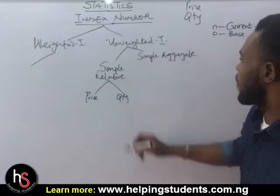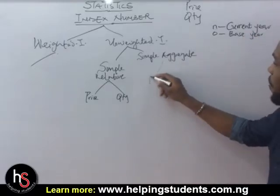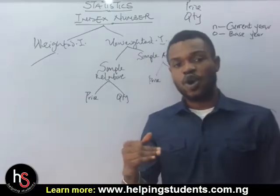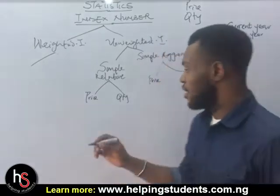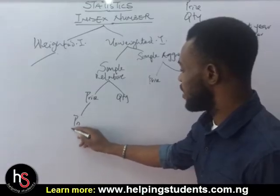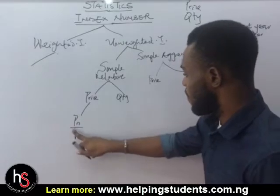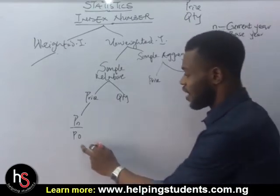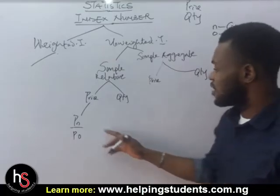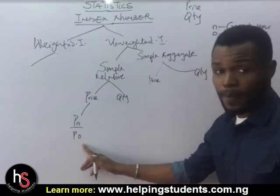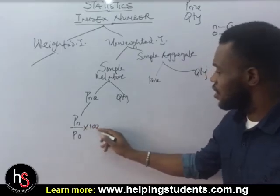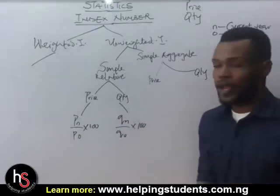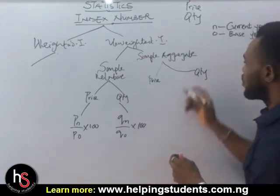Under the simple relative we'll talk about price and quantity. Under the simple aggregate we'll also talk about price and quantity. Always have in mind that it is the price or quantity of the current year over the base year. For price we have Pn over Po times 100; for quantity we have Qn over Qo times 100.